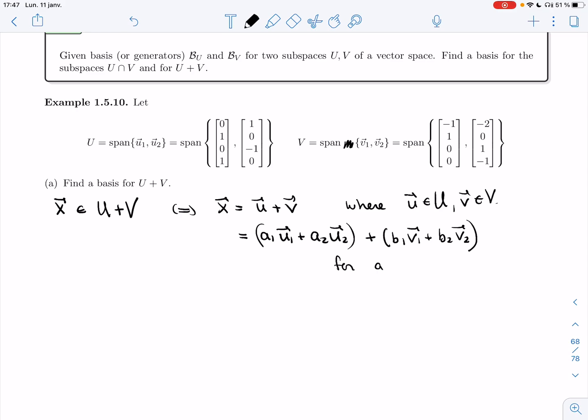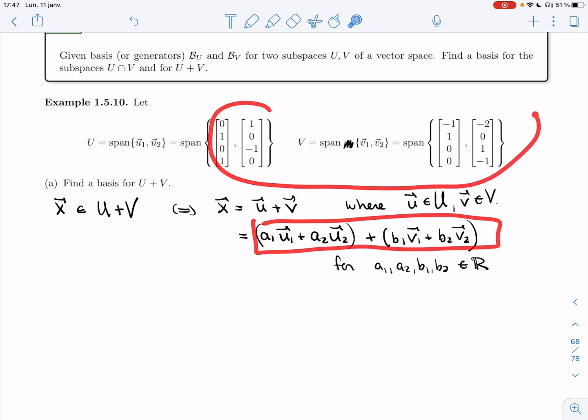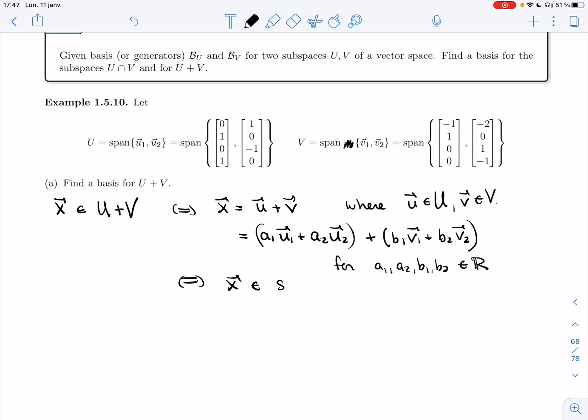For A1, A2, B1, B2, any real numbers. But if you notice, what we really have is a linear combination of all four vectors. And so it's the same as X being in the span of U1, U2, V1, V2.